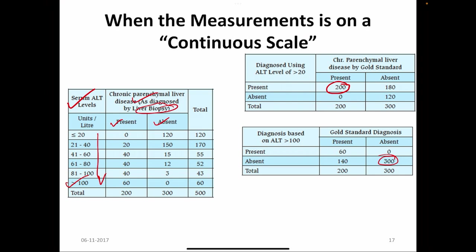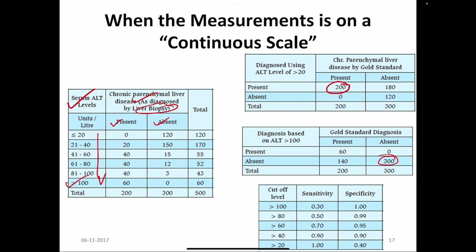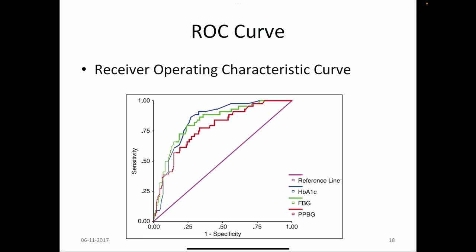We need a balance between sensitivity and specificity. If we plot sensitivity and specificity for different cutoff levels, as the cutoff decreases, the sensitivity increases but the specificity decreases. We need to identify a cutoff value with maximum sensitivity and specificity. In this scenario we use a ROC curve — receiver operating characteristic curve — with sensitivity on the y-axis and one minus specificity on the x-axis. We plot sensitivity versus one minus specificity for different cutoff values and look for the value closest to the top corner. The best sensitivity and specificity values can be identified using this ROC curve.